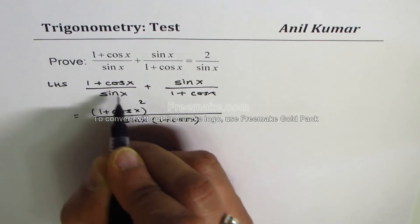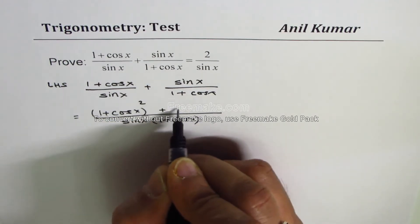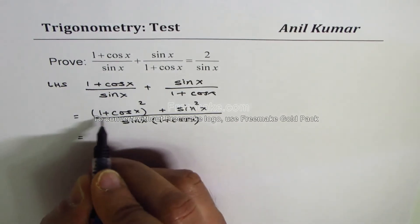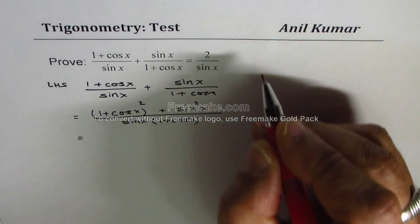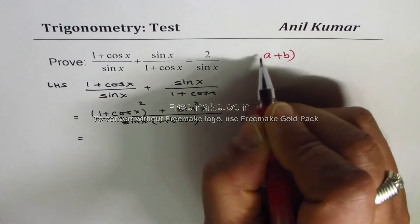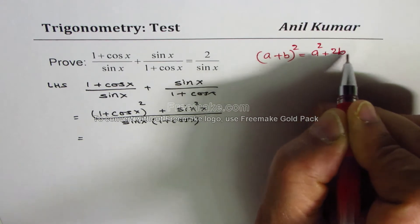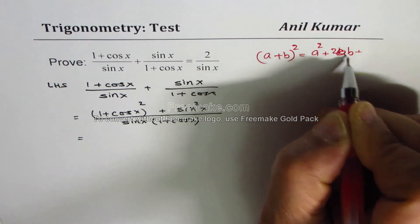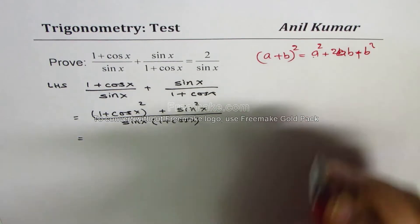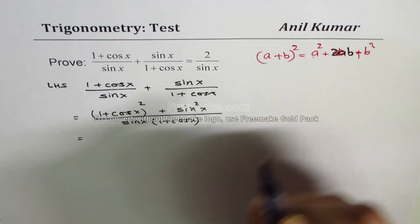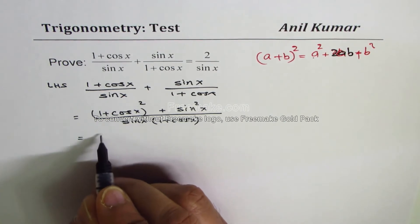This times that plus sine squared x. Let's expand this using the formula we know: (a + b) whole square equals a squared plus 2ab plus b squared, not just a squared plus b squared.